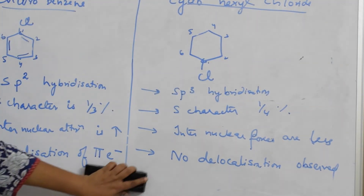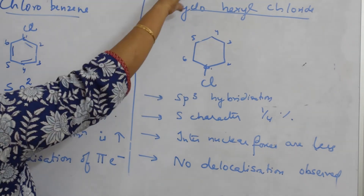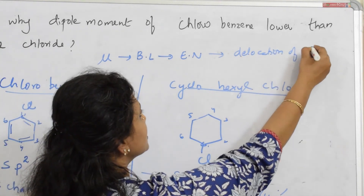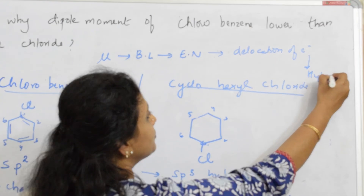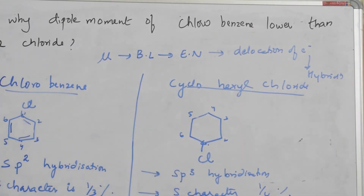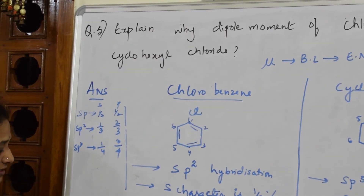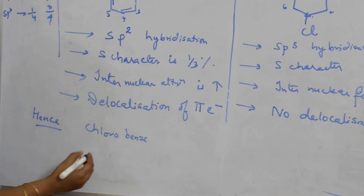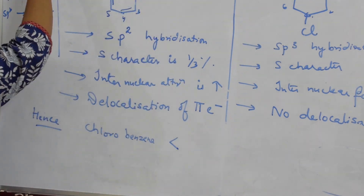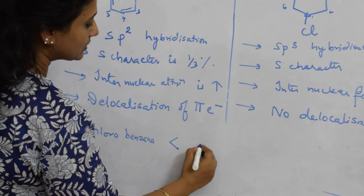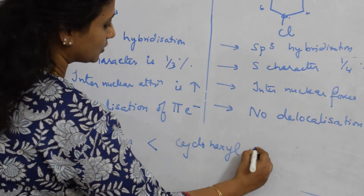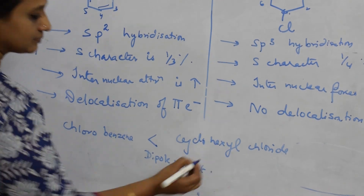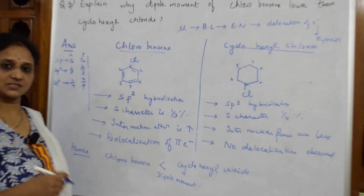To summarize: we discussed dipole moment in terms of electronegativity, s character of hybridization, and delocalization of pi electrons. Because of these two reasons — higher s character of sp2 carbon making it more electronegative, and delocalization of pi electrons — chlorobenzene has a lower dipole moment than cyclohexyl chloride. Thank you for watching; see you in the next video.